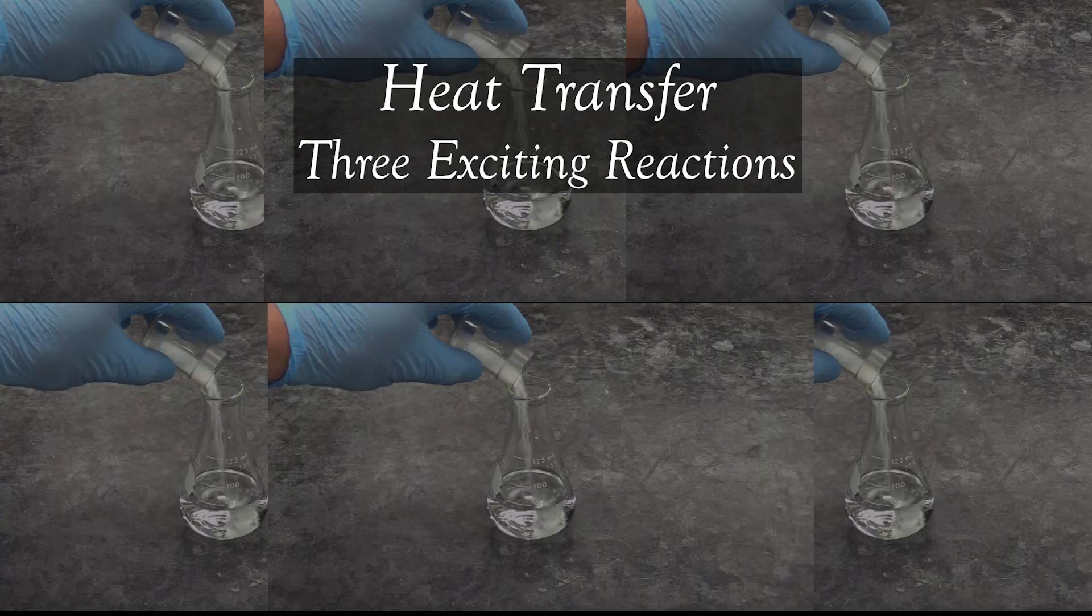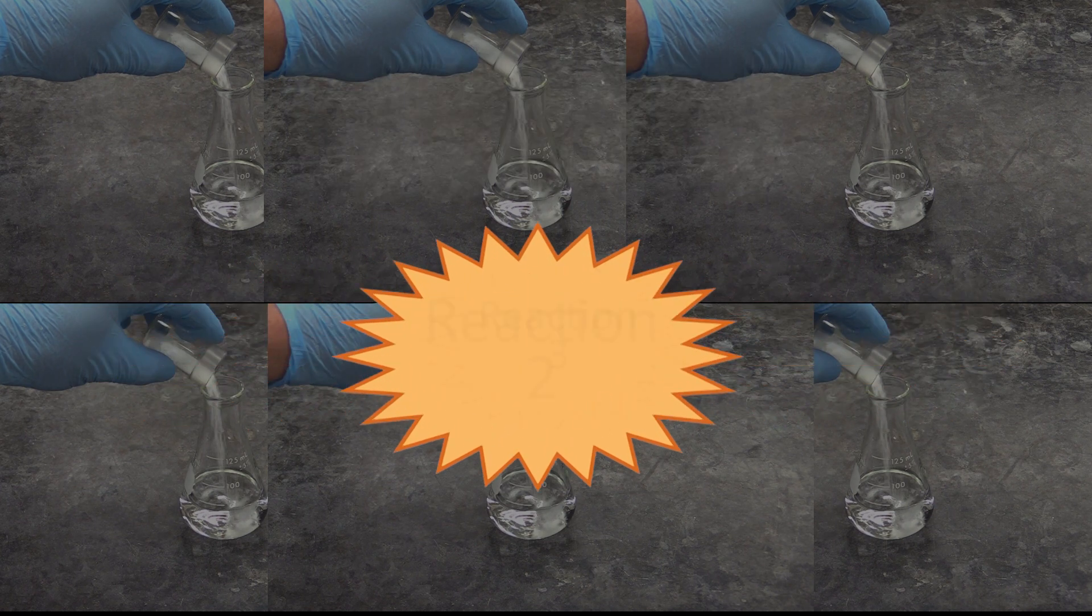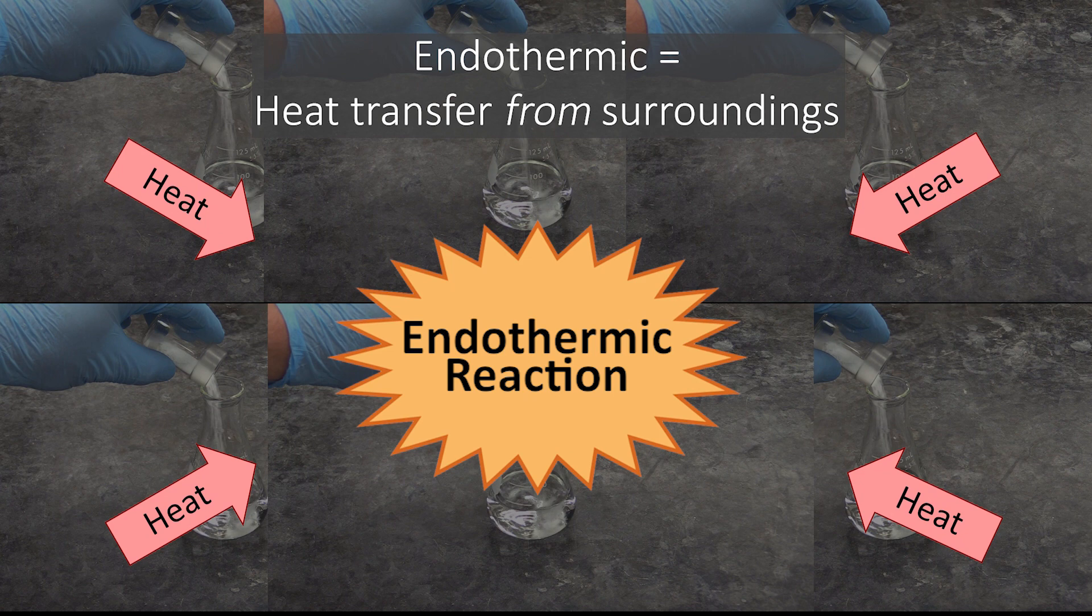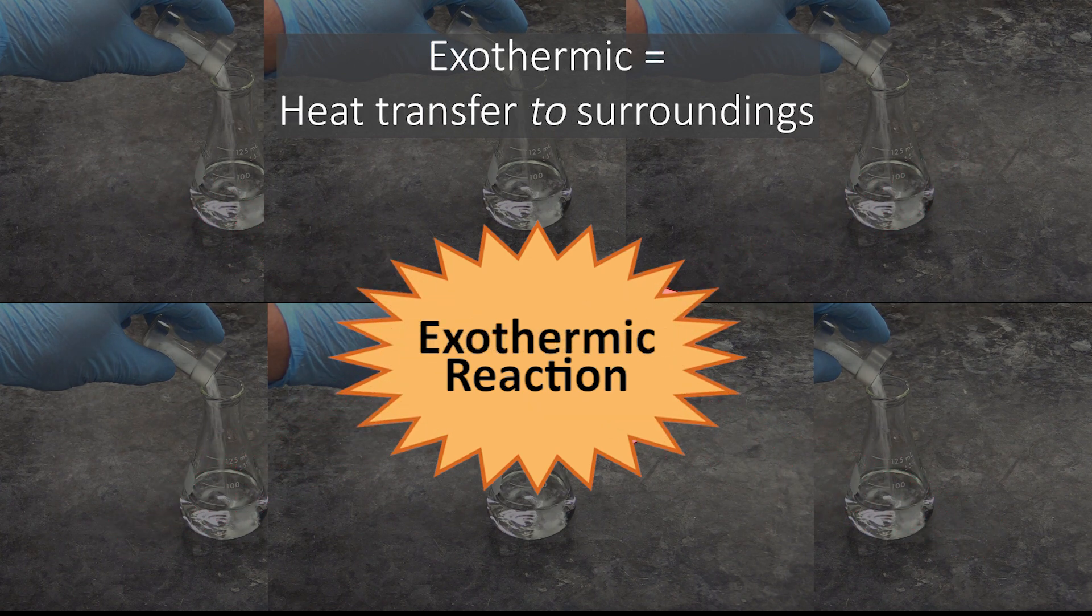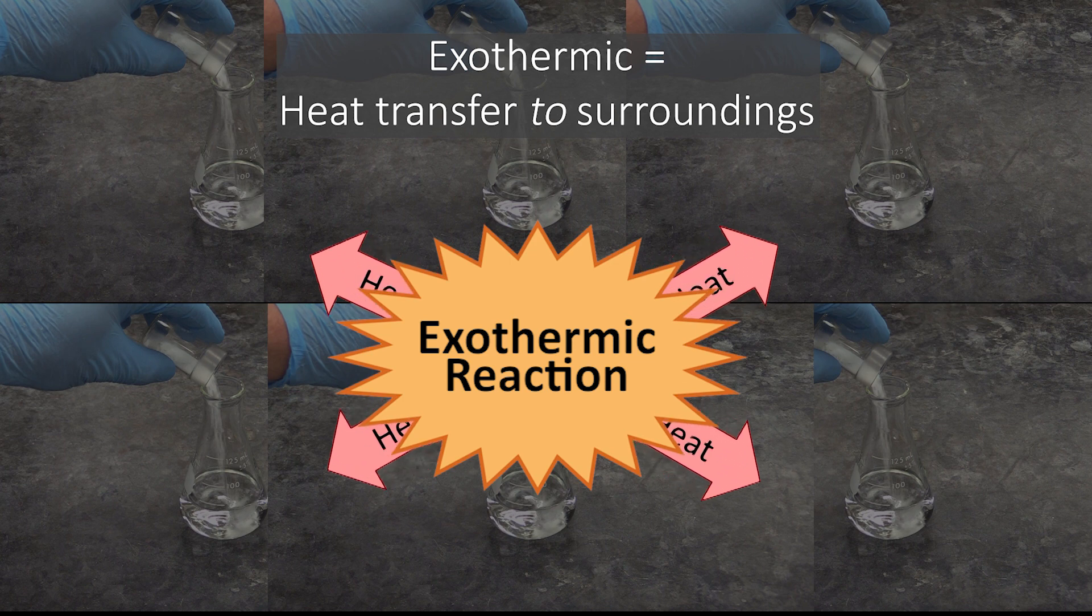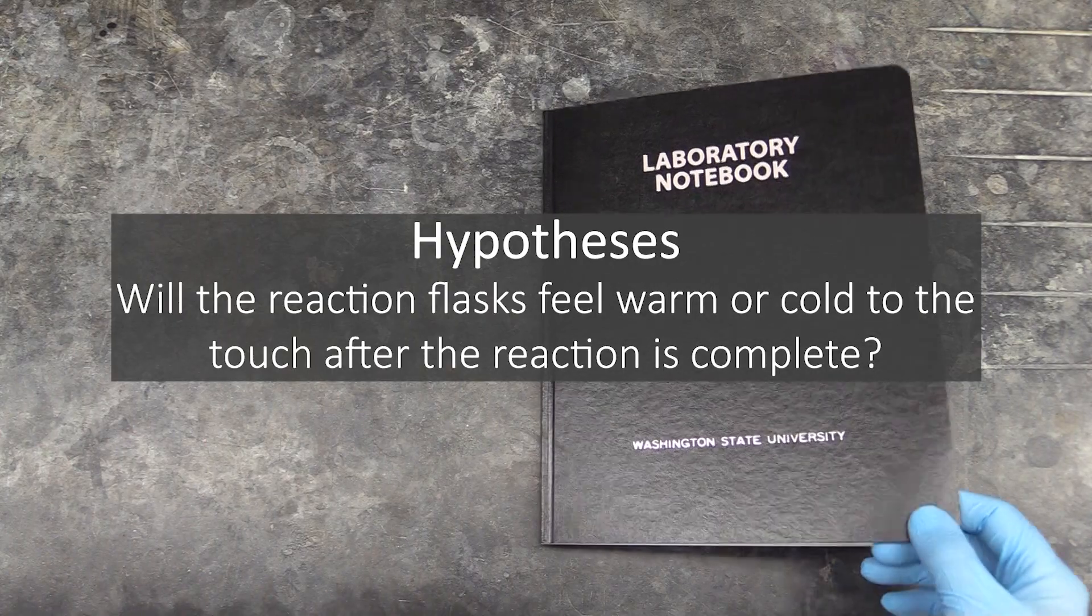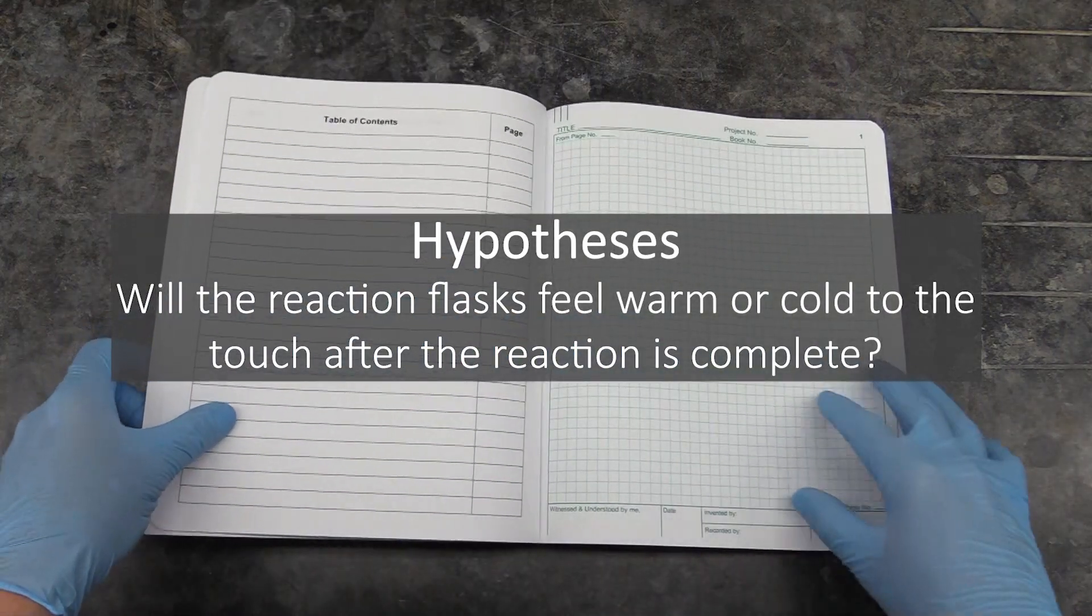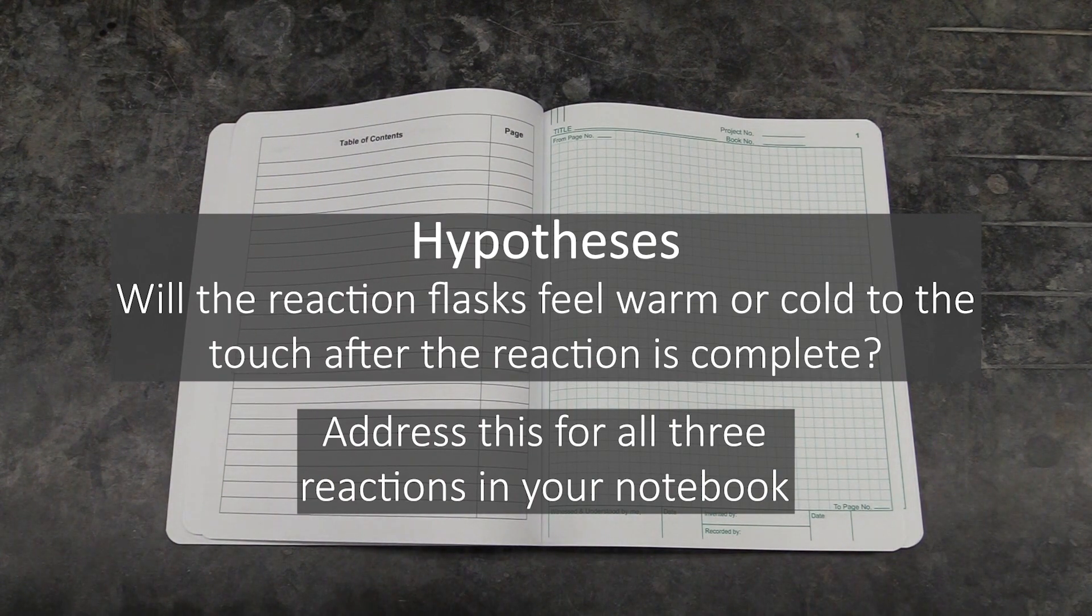The heat transfer experiment will involve not one, not two, but three different reactions. These will either be endothermic reactions that absorb heat from their surroundings, or exothermic reactions that evolve heat to their surroundings. Your procedure document will tell you which is which. You will need to hypothesize, in your notebook, whether the flasks these take place in will feel warm or cold to the touch after the reaction is complete.